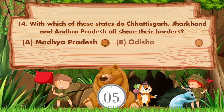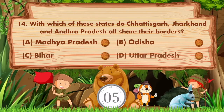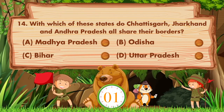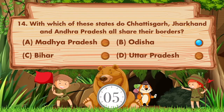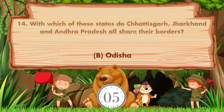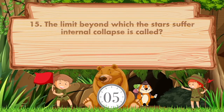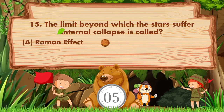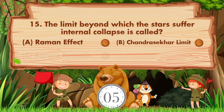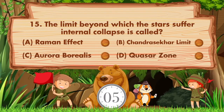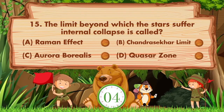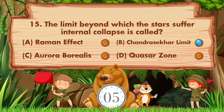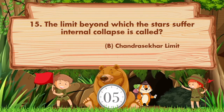With which of these states do Chhattisgarh, Jharkhand, and Andhra Pradesh all share their borders? Option A: Madhya Pradesh, B: Odisha, C: Bihar, D: Uttar Pradesh. Answer is option B, Odisha. The limit beyond which stars suffer internal collapse is called: Option A: Raman Effect, B: Chandrasekhar Limit, C: Aurora Borealis, D: Quasar Zone. Answer is option B, Chandrasekhar Limit.